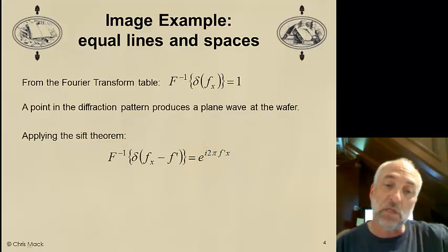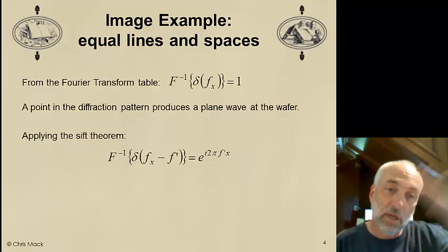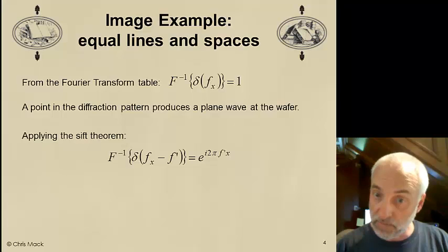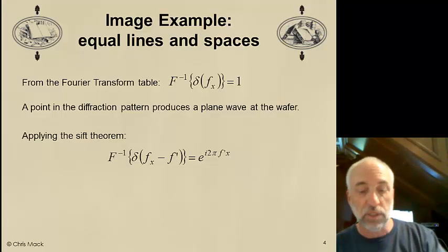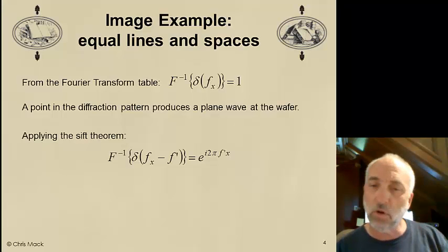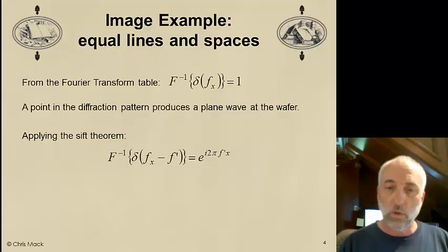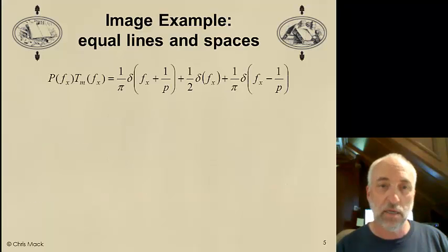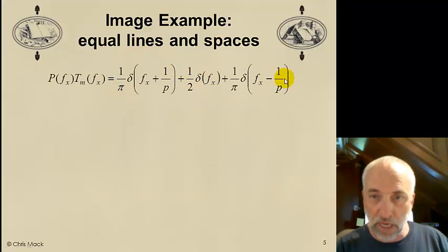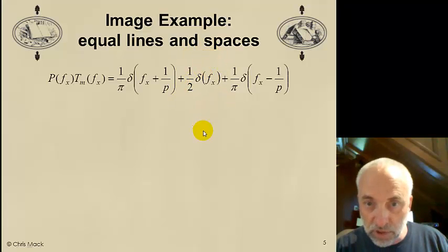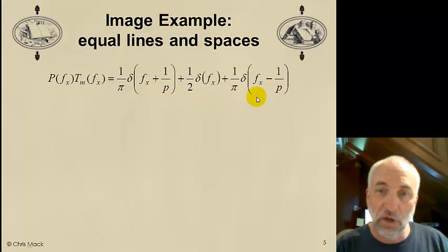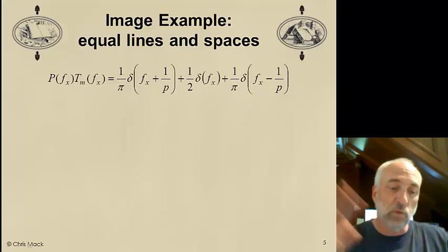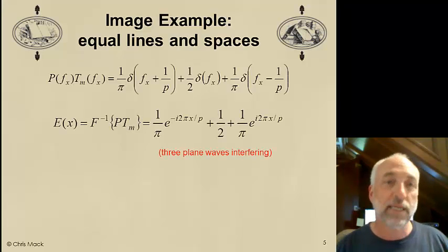But it's not a plane wave normally incident on the wafer. It's a plane wave tilted and striking the wafer at an angle. The angle is given by f prime. Remember, f is sine theta over lambda. So the angle will be theta that it comes and intersects the wafer with. Angle relative to the normal. So we have now a tilted plane wave. If we apply this inverse Fourier transform to all three, we see the zero order will produce a plane wave normally incident.